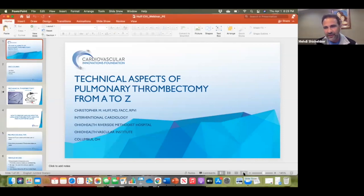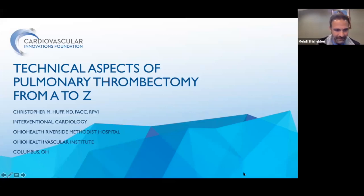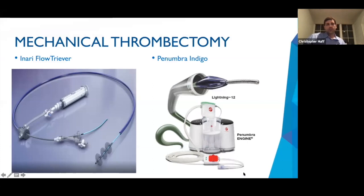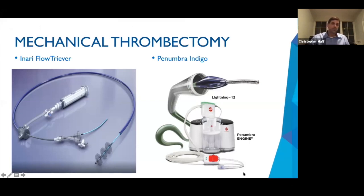Thanks, Mehdi. I'm going to talk about the technical aspects of pulmonary thrombectomy. Currently, there are two main catheters used: one is the Inari Flowtriever, and the other is the Indigo device by Penumbra, which has 12 and 8 French catheters. Due to time constraints, we'll focus on the Inari Flowtriever. There's a 20 and 24 French main catheter placed in the PA, and mechanical thrombectomy is performed via a Luer lock syringe. You can also place nitinol discs through the catheter, which can be deployed in the PA to help remove more chronic thrombus.